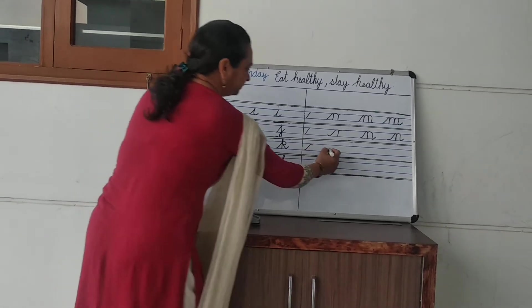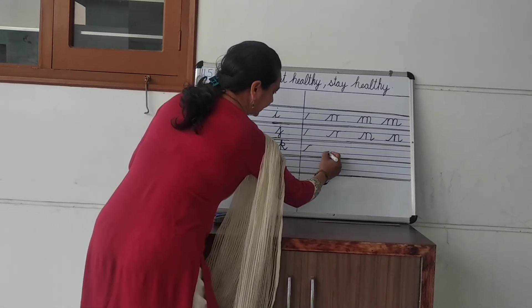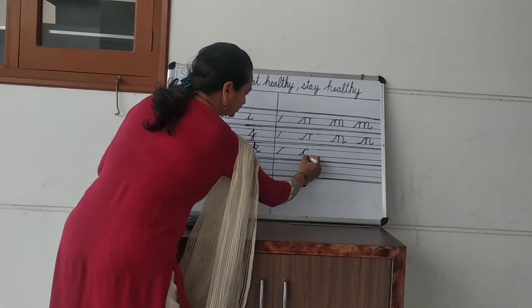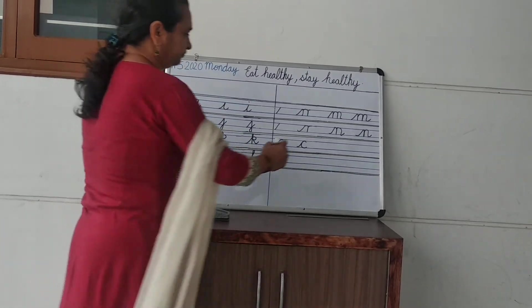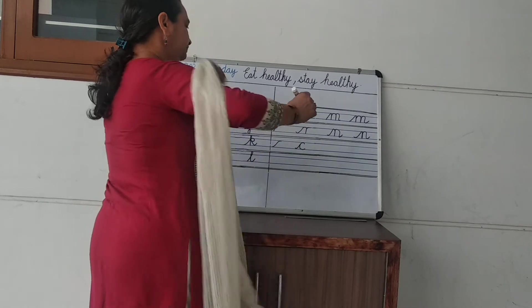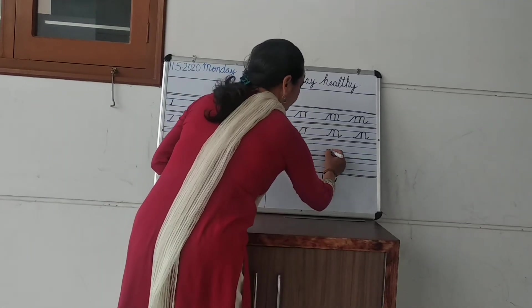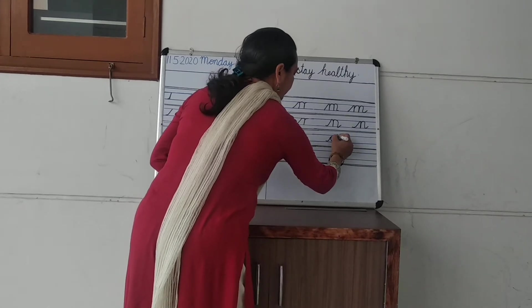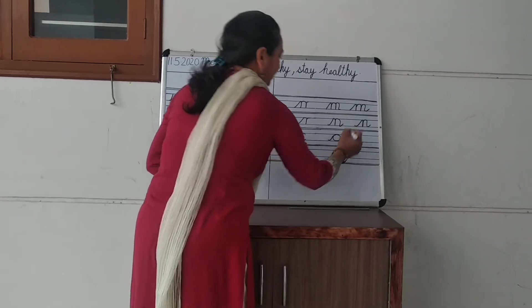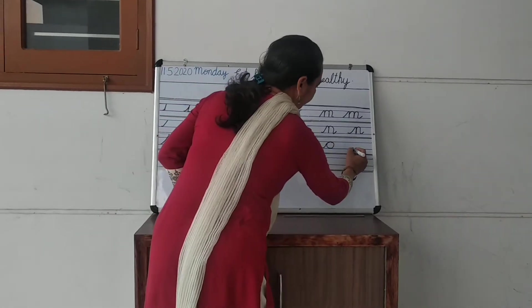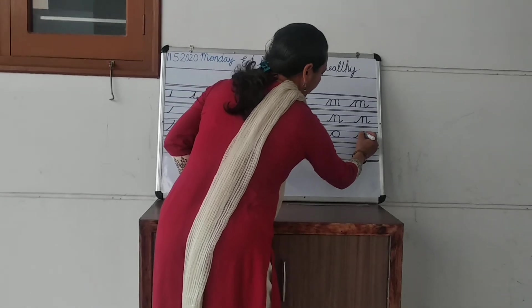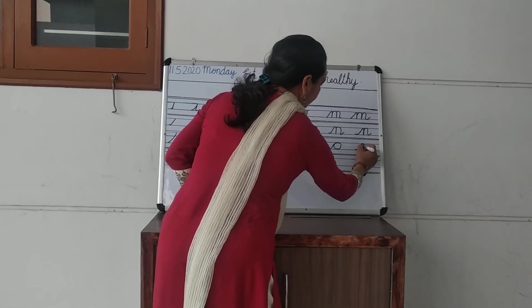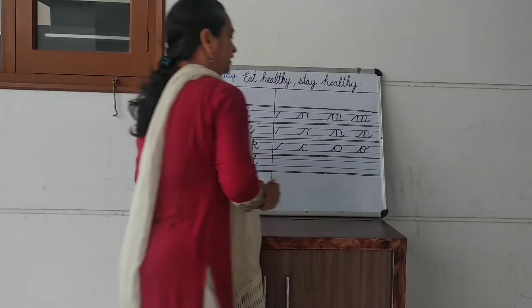Next alphabet is o. First step, second step: first draw a c shape. Then make a circle. Last step: we make a tail — from the blue line, draw a circle then make a tail. That's o.